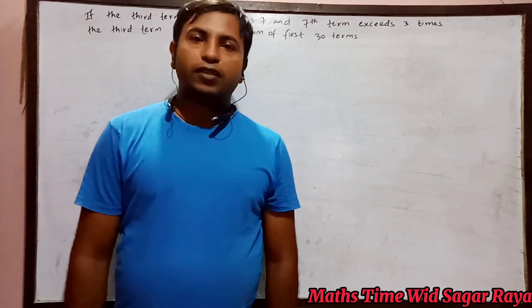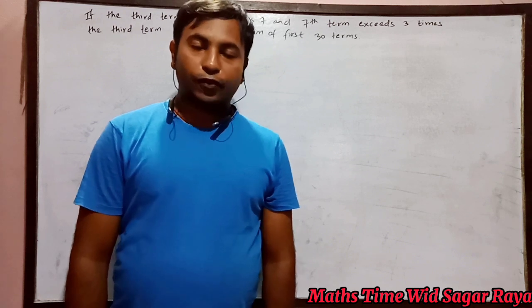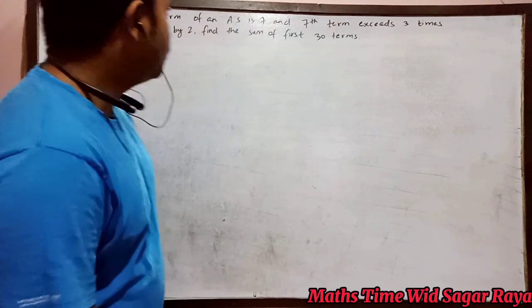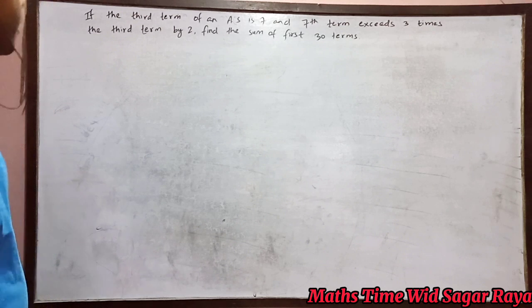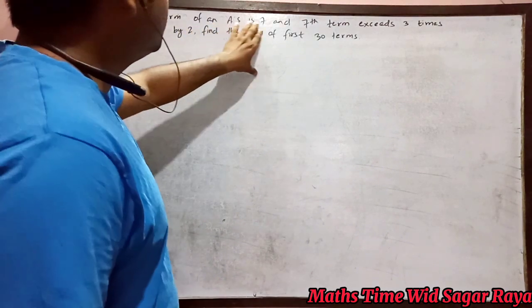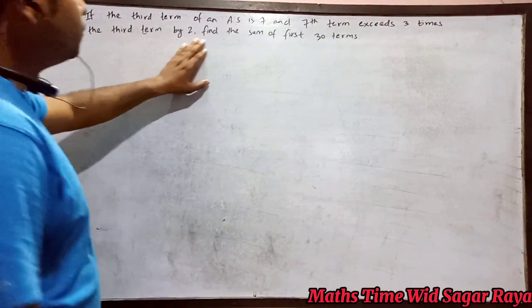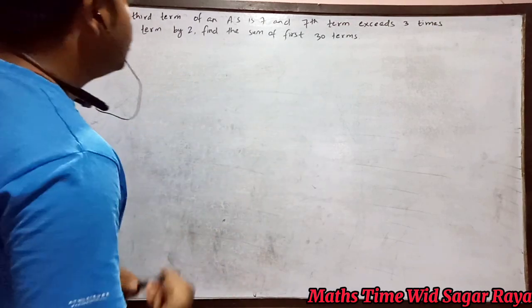Hello everyone, welcome to my channel Maths Time with Sagar Raya. Today I'm back with another question from sequence and series. Let's go through the question: If the third term of an arithmetic series is 7 and the seventh term exceeds three times the third term by 2, find the sum of first 30 terms.